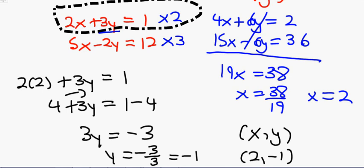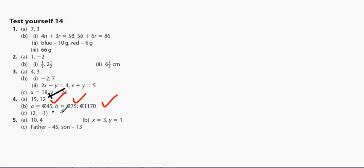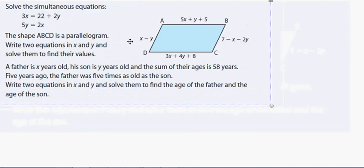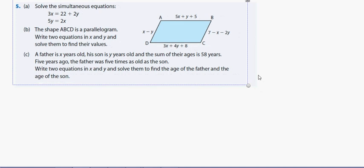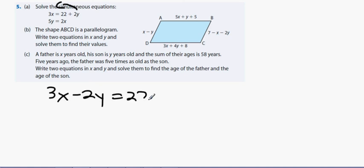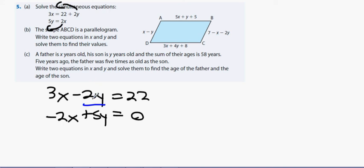Question 5a: solve these simultaneous equations. Rearranging to one side: 3x minus 2y equals 22, and minus 2x plus 5y equals 0. To eliminate the y's, multiply the top by 5 and the bottom by 2, giving 15x minus 10y equals 110 and minus 4x plus 10y equals 0.